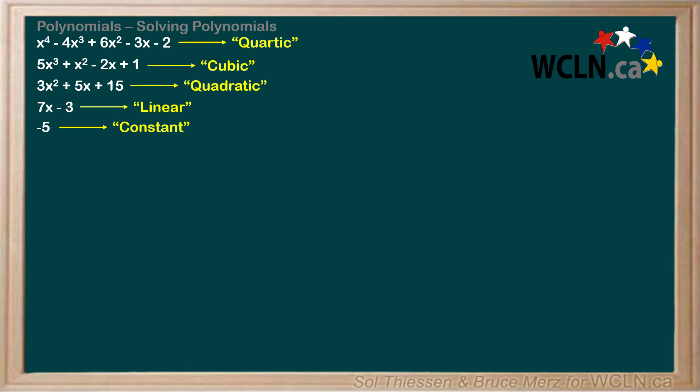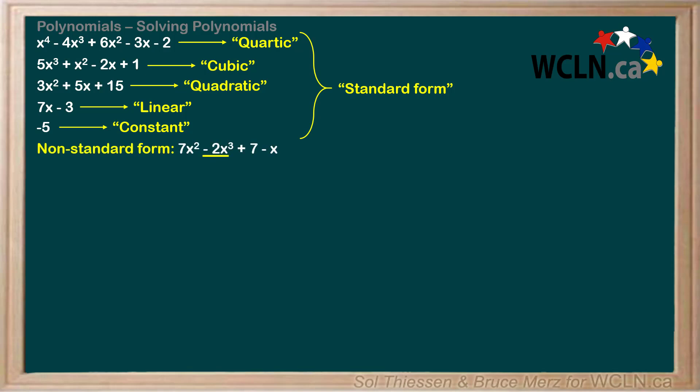All of these polynomials are written in standard form, meaning they are written with their terms ordered from highest to lowest degree. An example of a polynomial written in non-standard form could look like this. Keep in mind that the negative 2x cubed term is still the leading term, even though it's not written first, because it's the highest degree term.